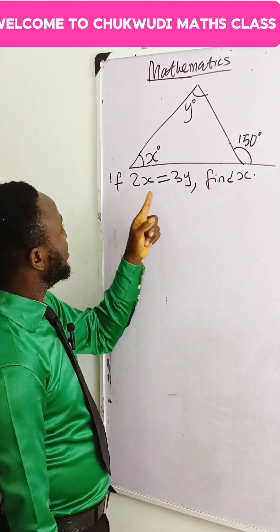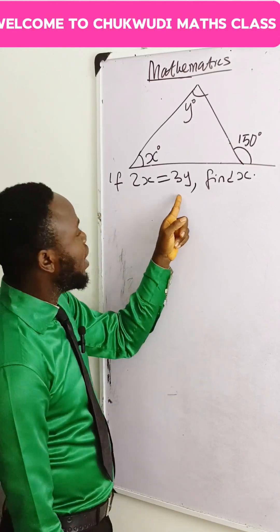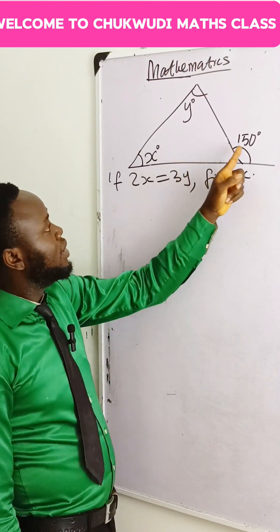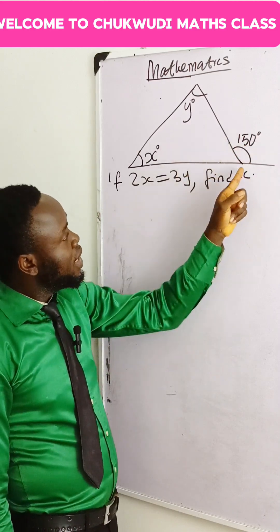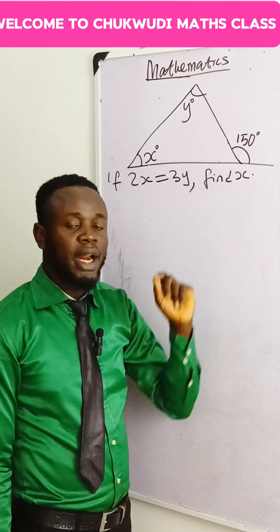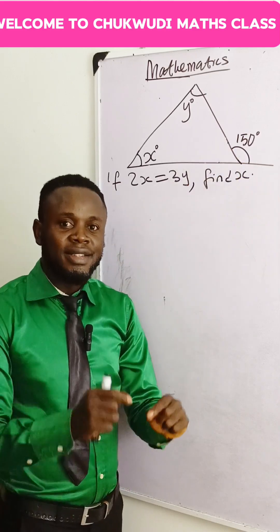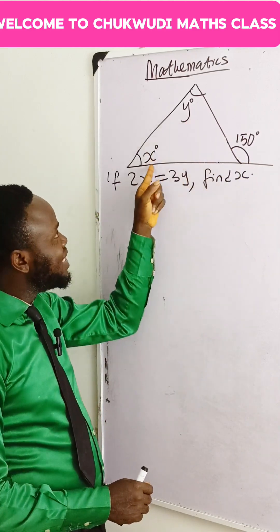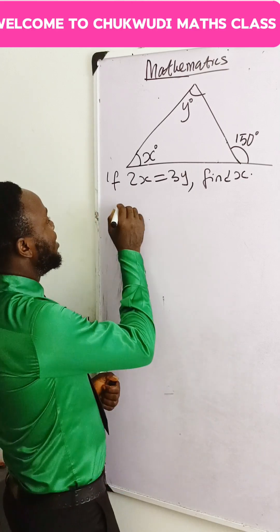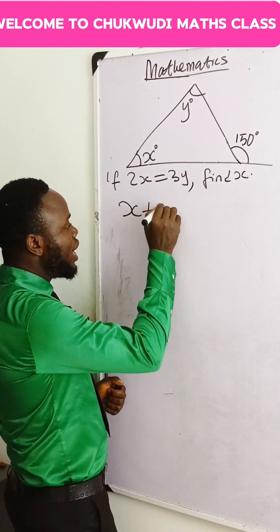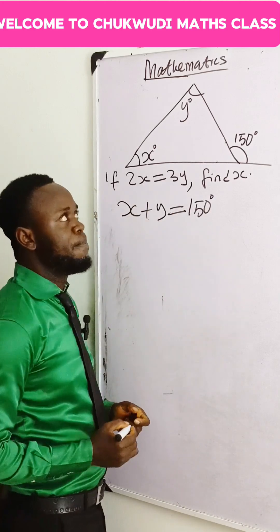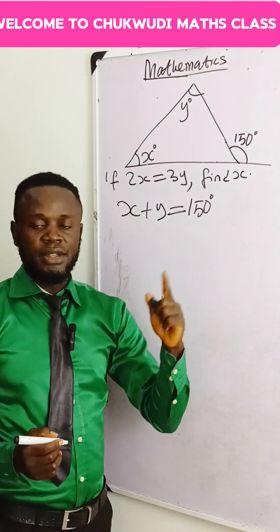If 2x is equal to 3y, find x. If you look at this triangle, you know that the exterior angle of a triangle is equal to the sum of the opposite interior angles. That is, x plus y is supposed to give us 150 degrees. That's the theorem there.